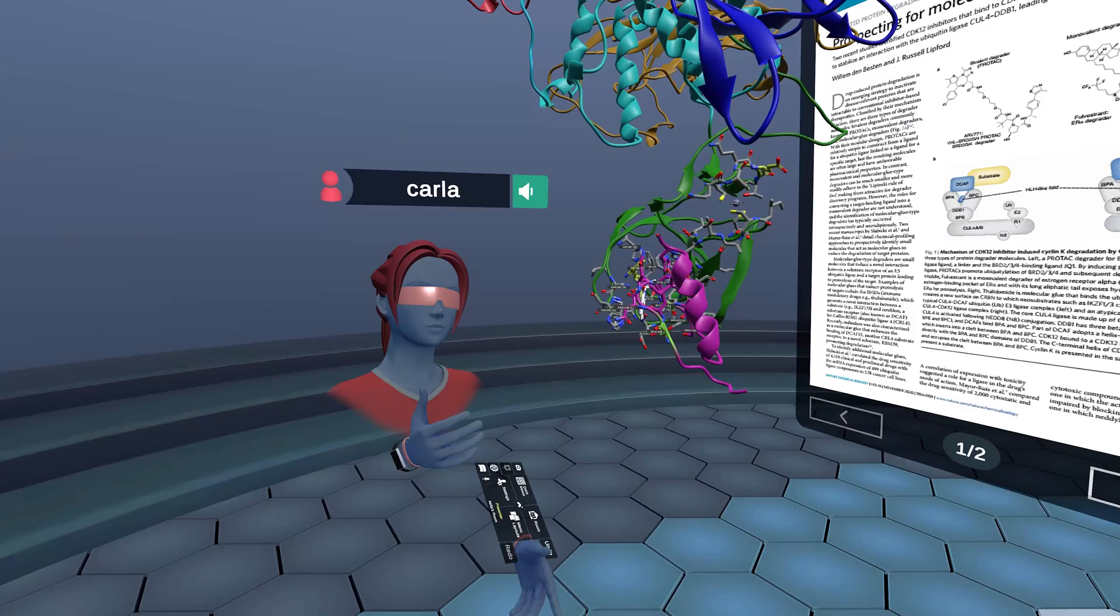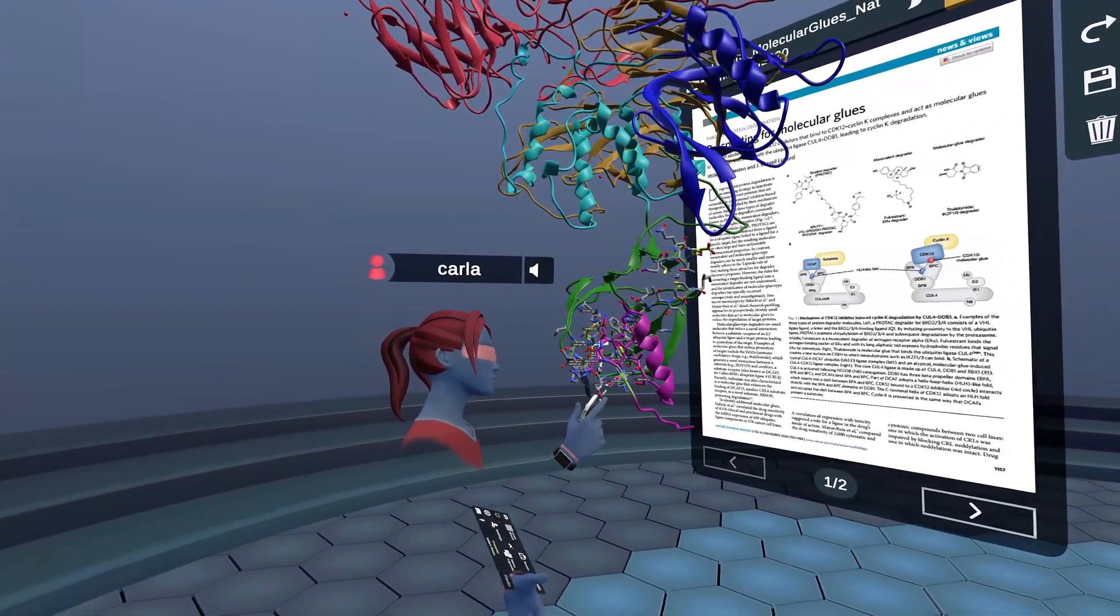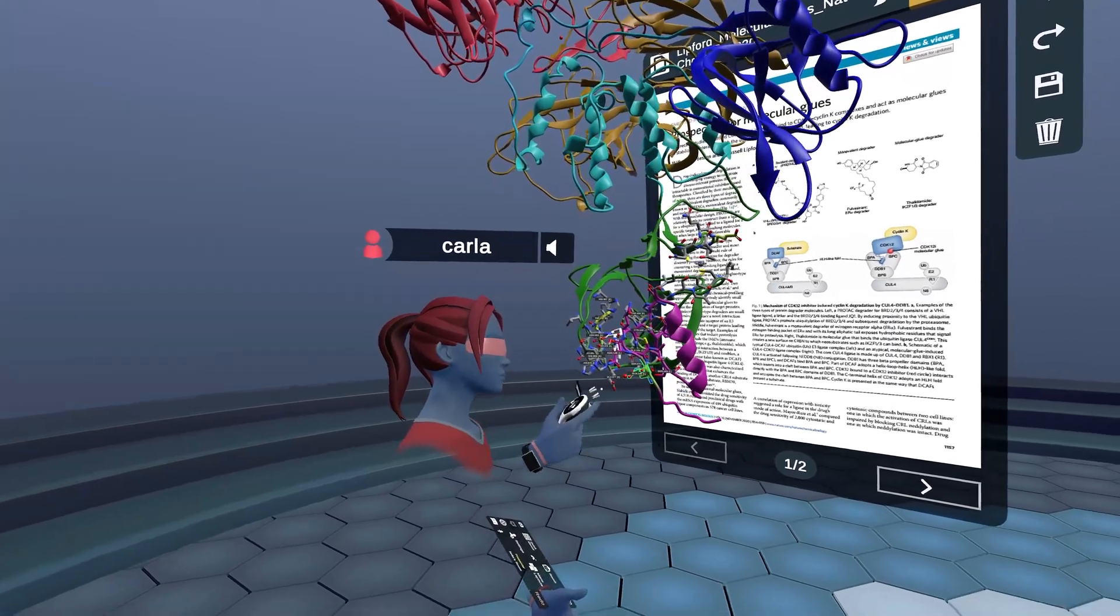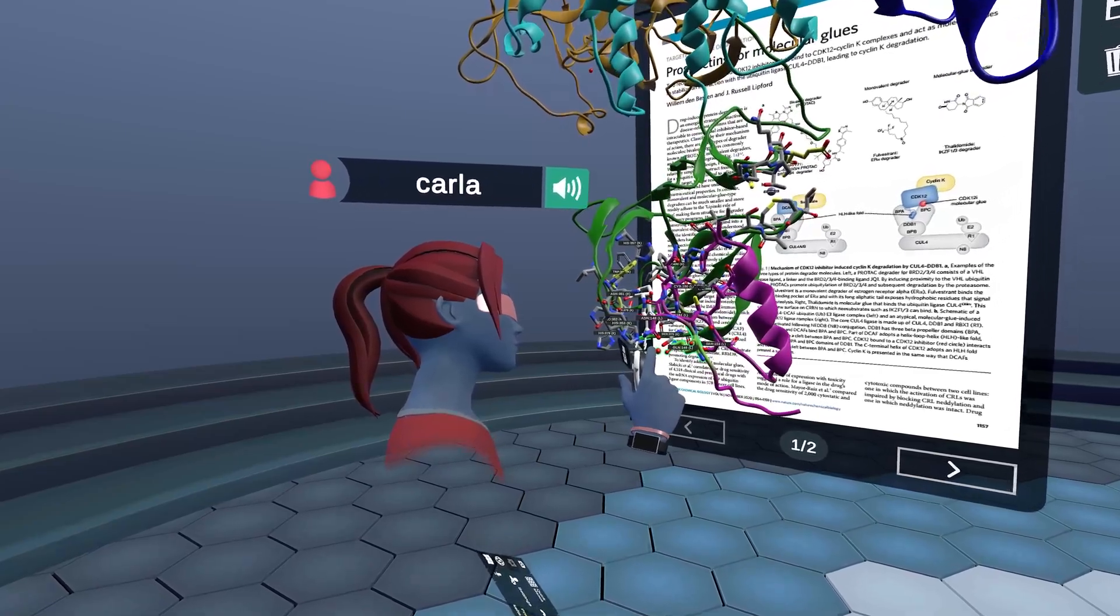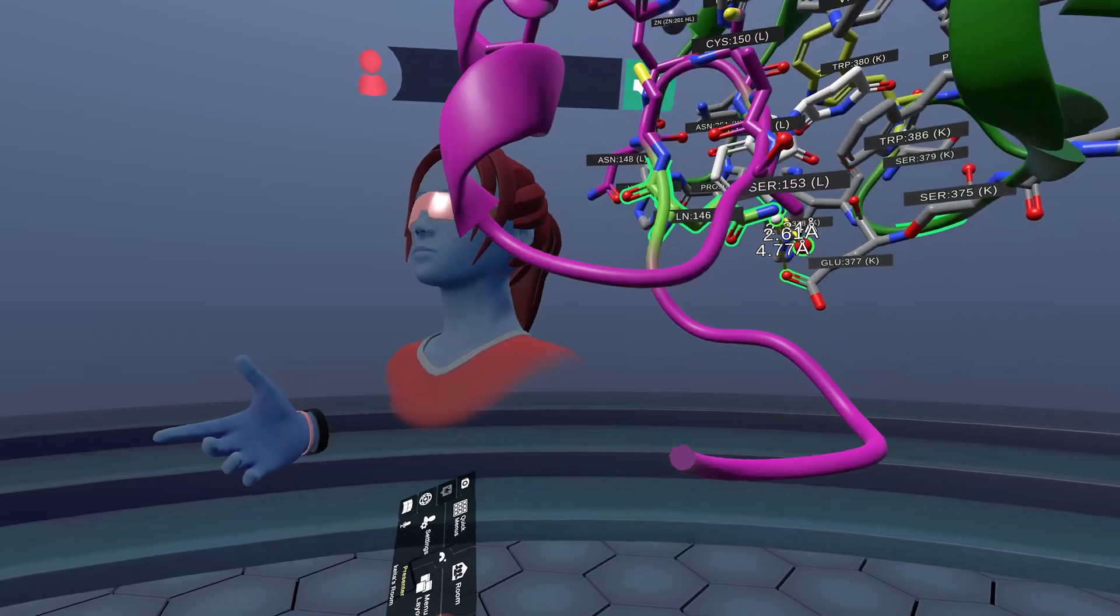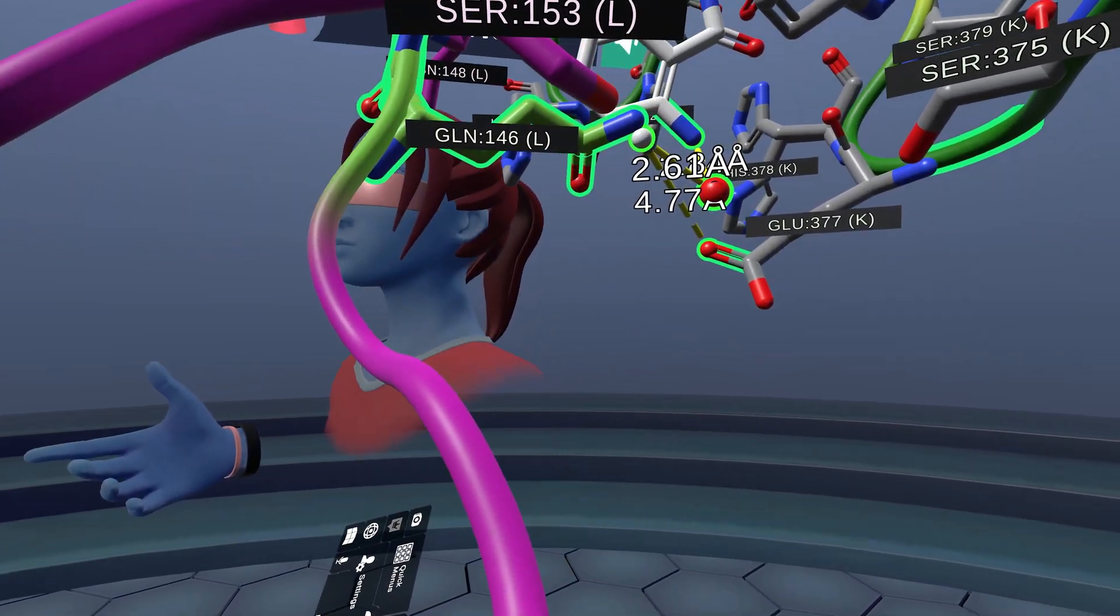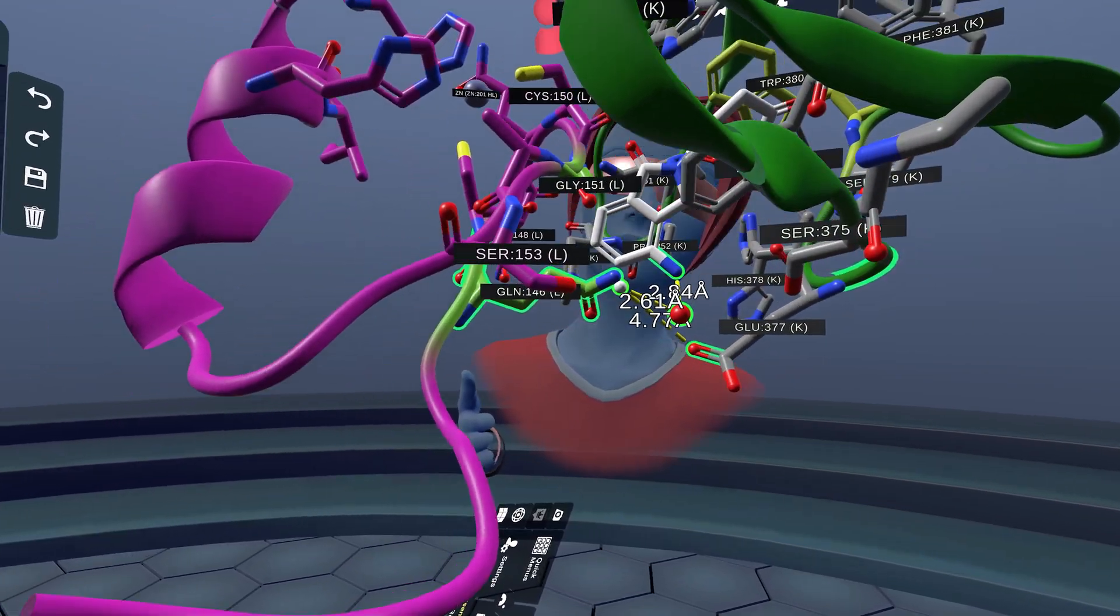The C4 amine of pomalidomide forms a water-mediated hydrogen bond with glutamine 146, which I've highlighted in green. Here's the water molecule, and there's the amine. Maybe I can try to measure it. Mutation of this residue, the glutamine 146 to isoleucine, equalizes the binding affinity across the three compounds.